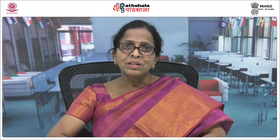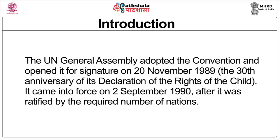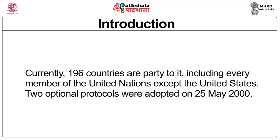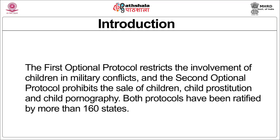The UN General Assembly adopted the Convention and opened it for signature on 20th November 1989, the 30th anniversary of its Declaration of the Rights of the Child. It came into force on September 2nd, 1990, after it was ratified by the required number of nations. Currently 196 countries are parties to the Convention including every member of the United Nations except the United States. These two optional protocols were adopted on 20th May 2000. The first optional protocol restricts the involvement of children in military conflicts and the second optional protocol prohibits the sale of children, child prostitution and child pornography.